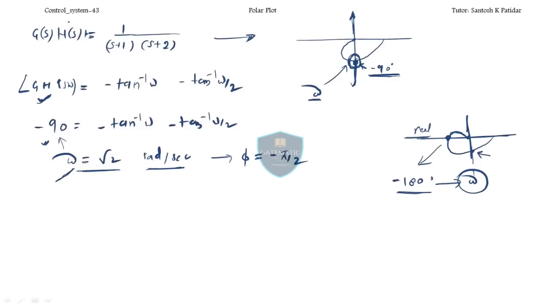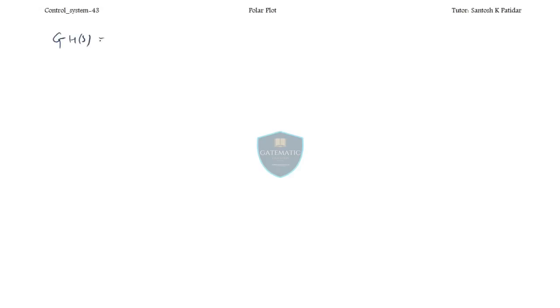I can provide direct formulas, but it's tedious to remember four formulas, so in the examination it's better to use this approach. Last time we saw that each finite pole changes the ending direction by minus 90 degrees clockwise. Today we will add a pole at the origin and see the effect.